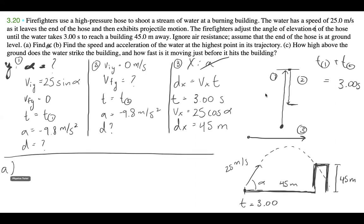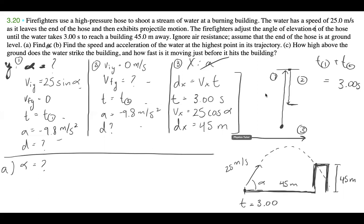For Part A, we want to find alpha. Looking at our knowns, in the X component the only thing missing is the angle — we have time, distance, and almost all of the speed. So we just need to isolate for alpha. We have DX equals VX times T, so 45 divided by T equals VX. That gives us VX equals 15 meters per second.